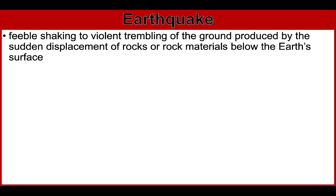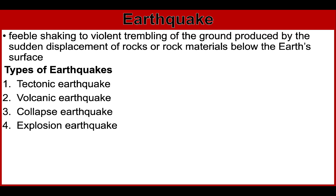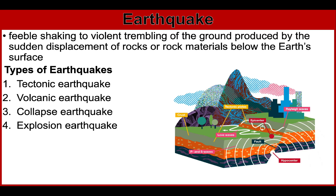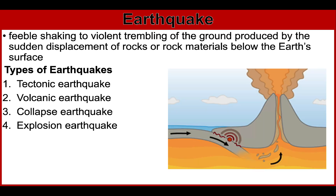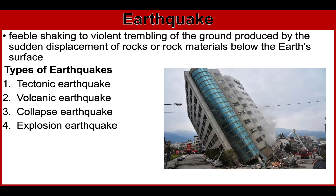There are four types of earthquakes: tectonic, volcanic, collapse, and explosion earthquakes. Tectonic earthquakes are those generated by the sudden displacement along faults in the solid and rigid layer of the earth. Earthquakes induced by rising lava or magma beneath active volcanoes are called volcanic earthquakes.